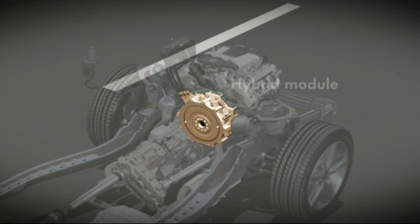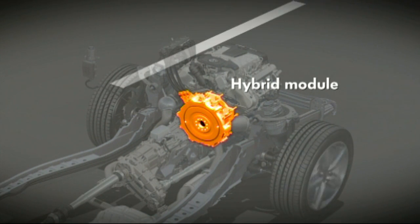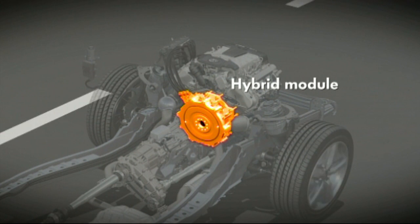At the heart of the drivetrain lies the compact hybrid module. As an integrated sub-assembly, it combines the separating clutch that is crucial to parallel drive with a 34-kilowatt electric motor.